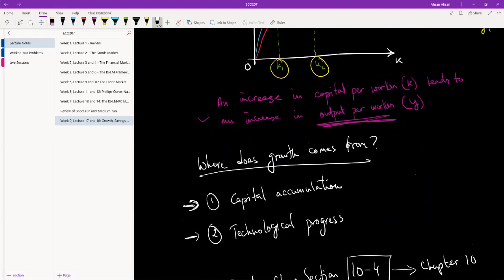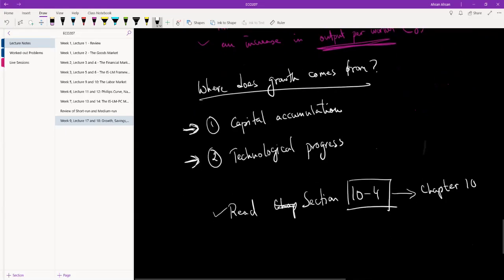Where does growth come from? We see that growth comes from two different places. One is capital accumulation and the other is technological progress. Now we're going to talk about this a lot more in Chapter 11, and we're also going to introduce a few more things. So before moving on to the next lecture, please read at least 10.4 and preferably the entire Chapter 10.